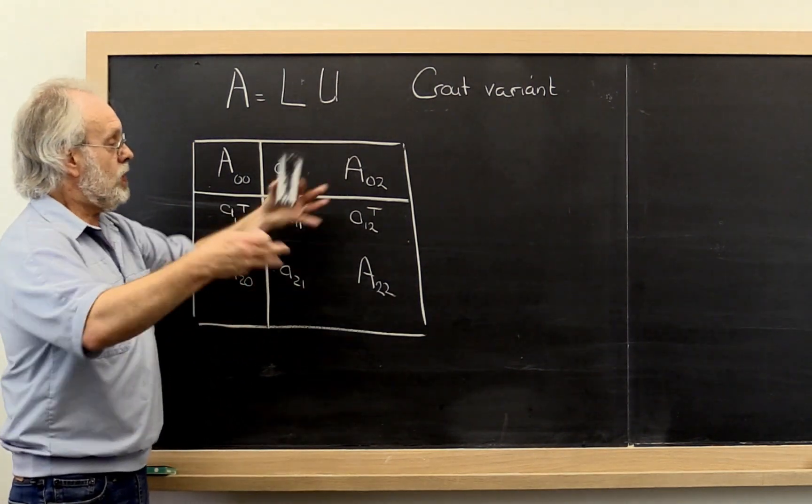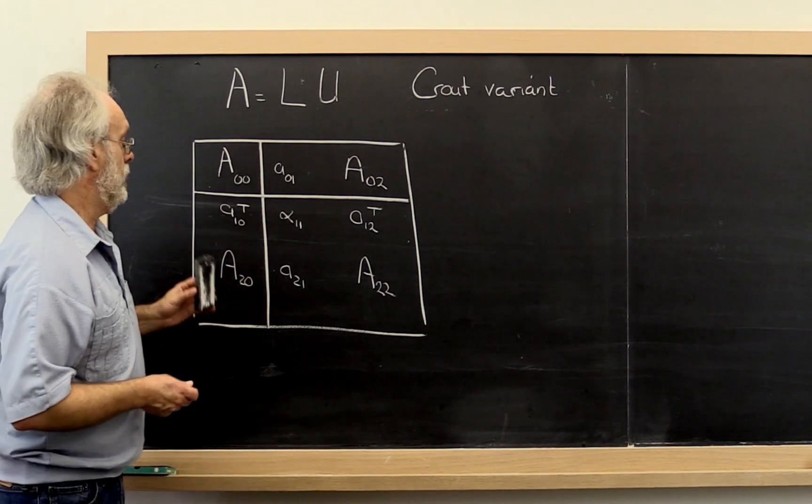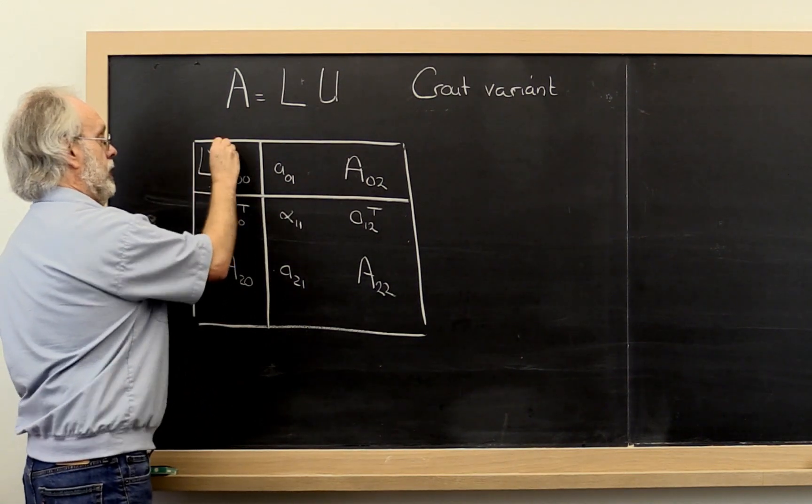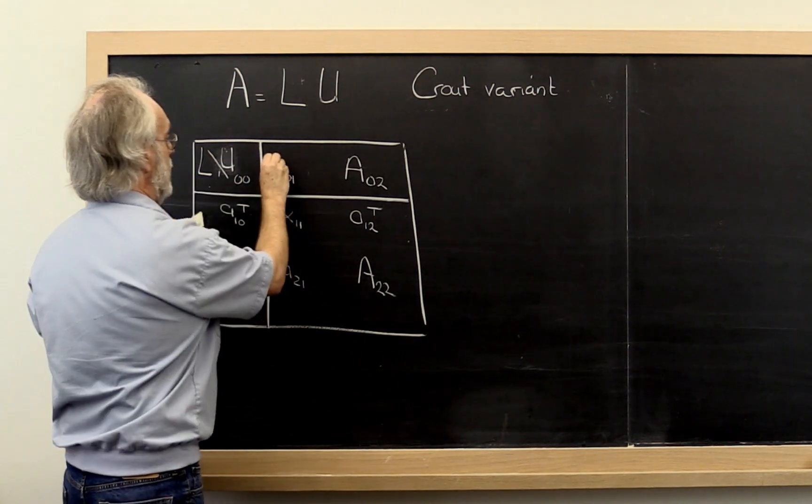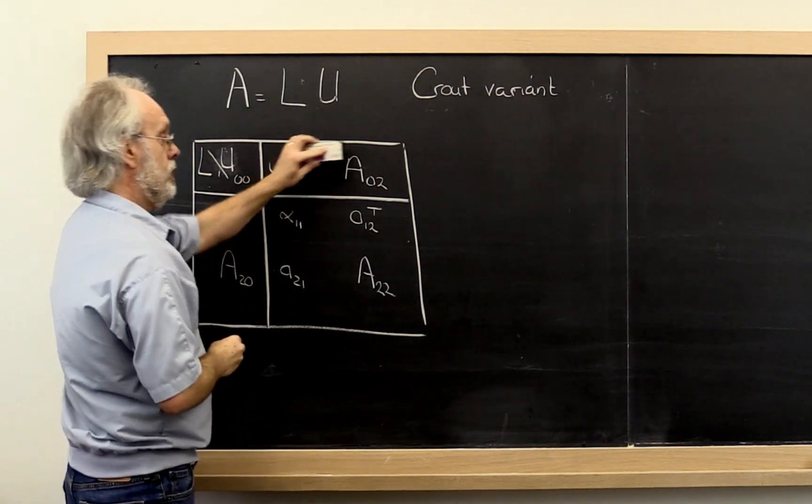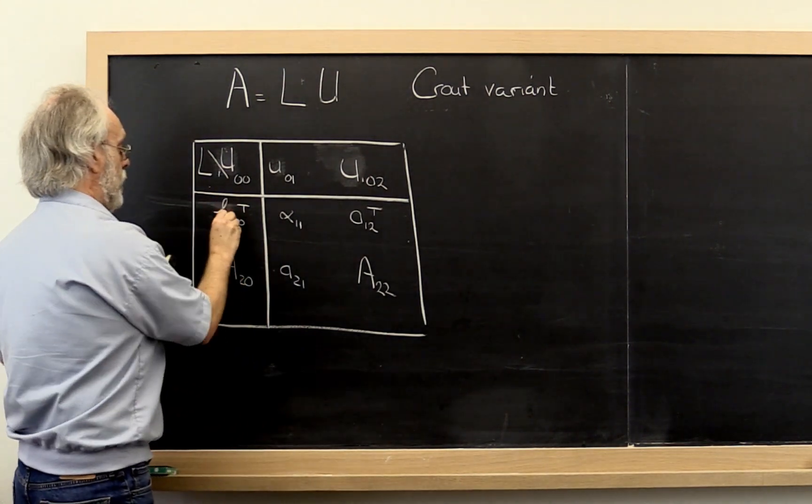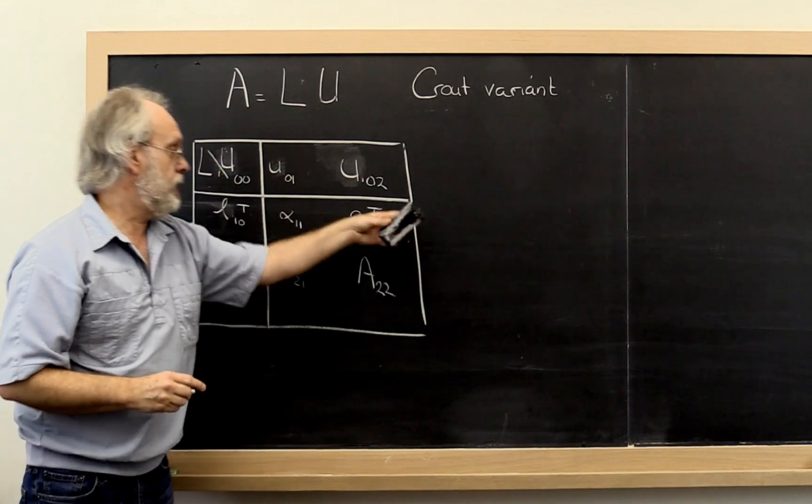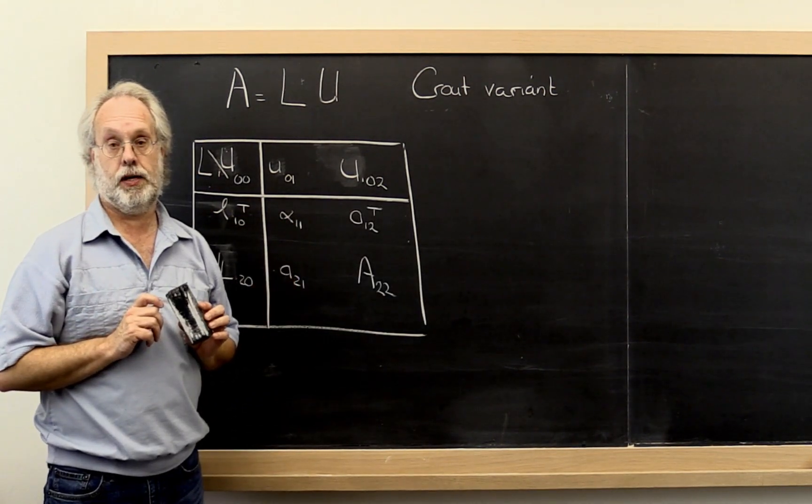Imagine that we have made progress towards computing the LU factorization in such a way that A00 has been updated with L and U00. A01 has been updated with U01 and so forth, and also these parts of L have been computed. But this part of the matrix has been left completely alone.